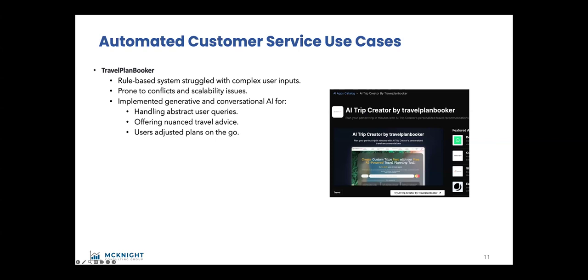This is probably the number one category of implemented AI in the enterprise. Travel Plan Booker is a company where you can say, 'I'm going from A to B — how should I get there? What are some of the things I can see along the way?' They were struggling with a rule-based system for something like this. Now you can plan your trip and interact with it — 'I want to do that, I don't want to do that, how much longer will that take, how much will that cost?' You get a lot of real-time flexibility with this system.